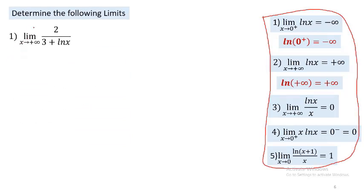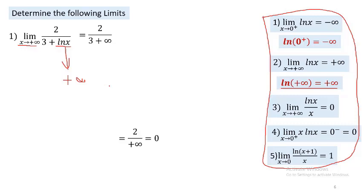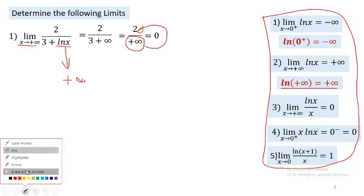Application 2: find the limit of ln x over x as x tends to 0⁺. When x tends to 0⁺, ln x tends to −∞. Substituting x = 0⁺: we get −∞ over 0⁺. Since minus over plus equals minus, and dividing infinity by a small number gives infinity, the answer is −∞.